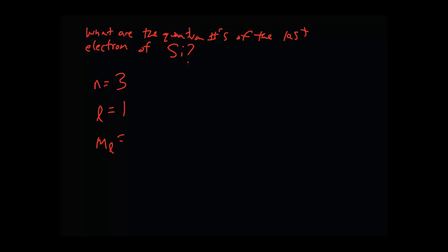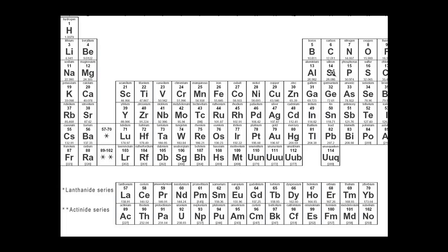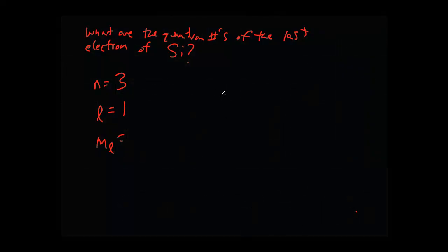And in that P, since it's 2P2, those two electrons are going to be filled this way. So you have negative 1, 0, 1. And that quantum number is going to be 0.